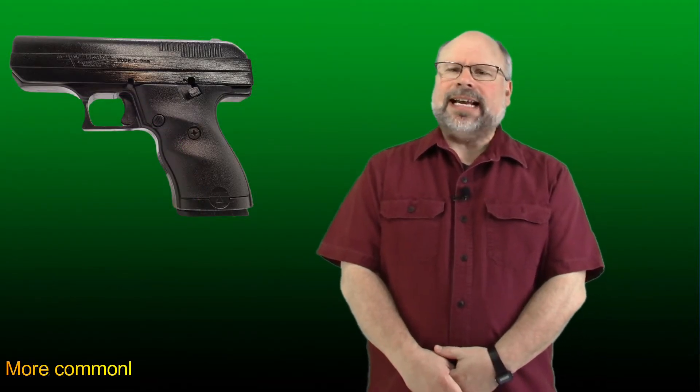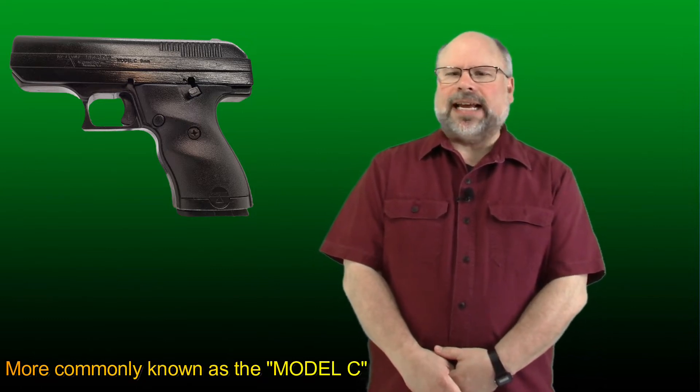In 1993, a slightly shorter and more compact version of the JS9 was developed, called the JS9 Compact. It had a barrel length of 3.5 inches long, and with its alloy frame weighed in at 32 ounces.